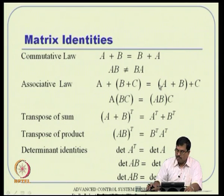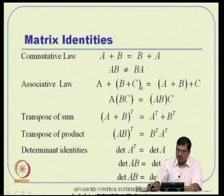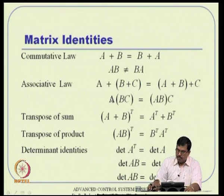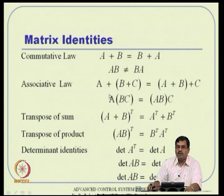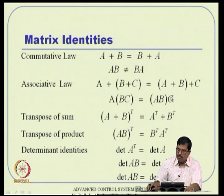The associative law holds for both addition and multiplication: (A + B) + C = A + (B + C), and similarly for products. The commutative law is valid only for addition. Also note that in the associative law for multiplication, you do not have the luxury of changing the sequence — the order must remain the same.